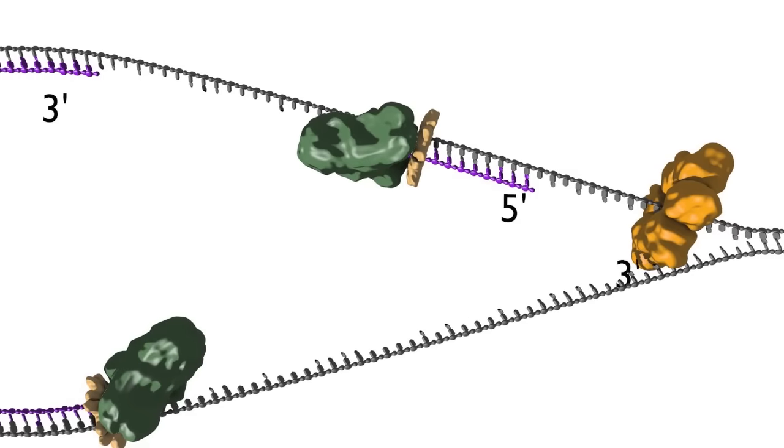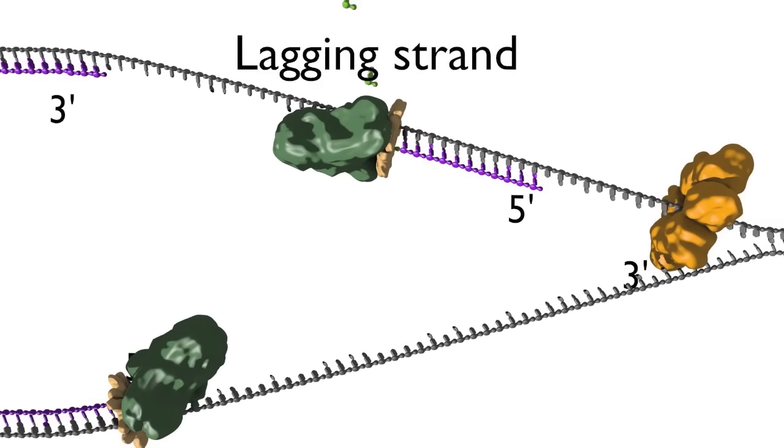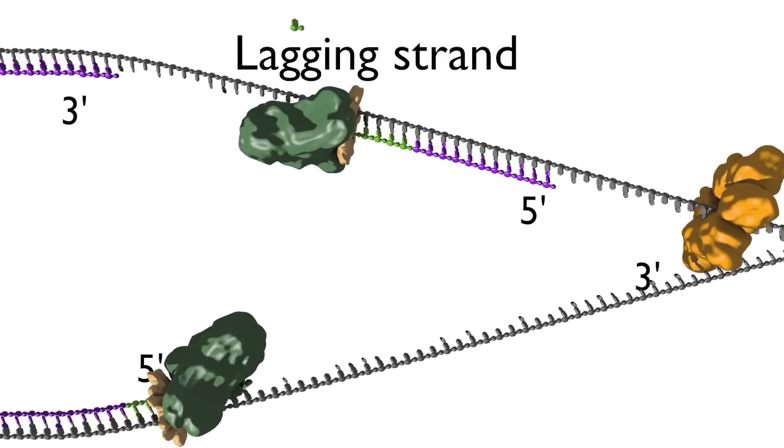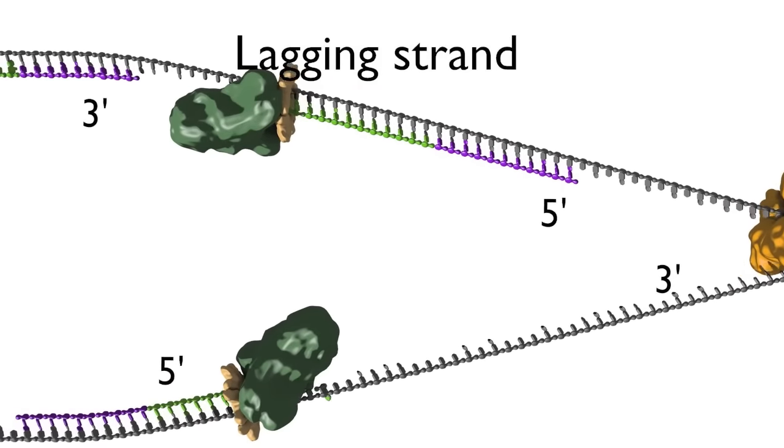The top strand is the lagging strand, on which just a short stretch of DNA is made by the polymerase elongating in the five prime to three prime direction.